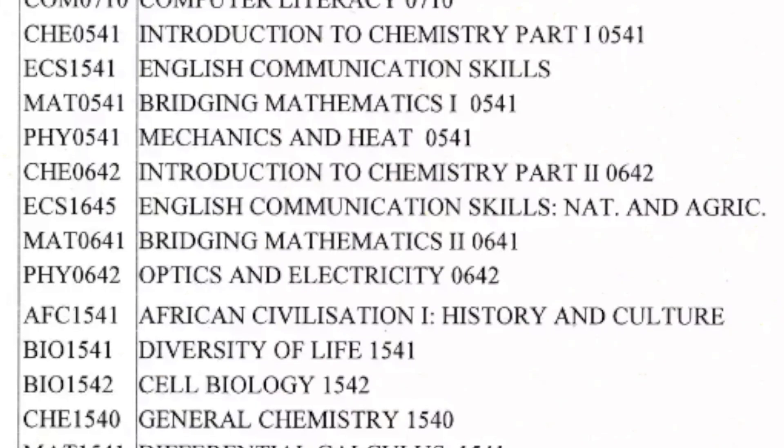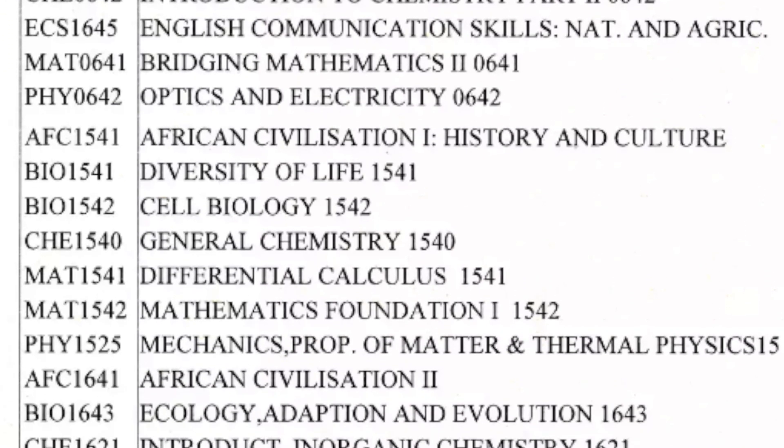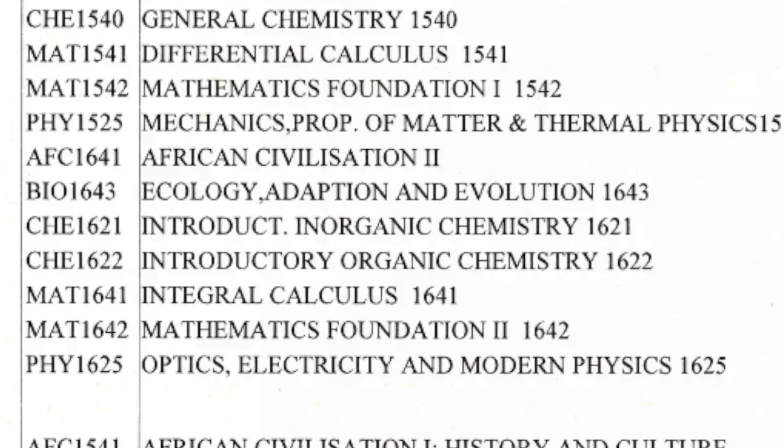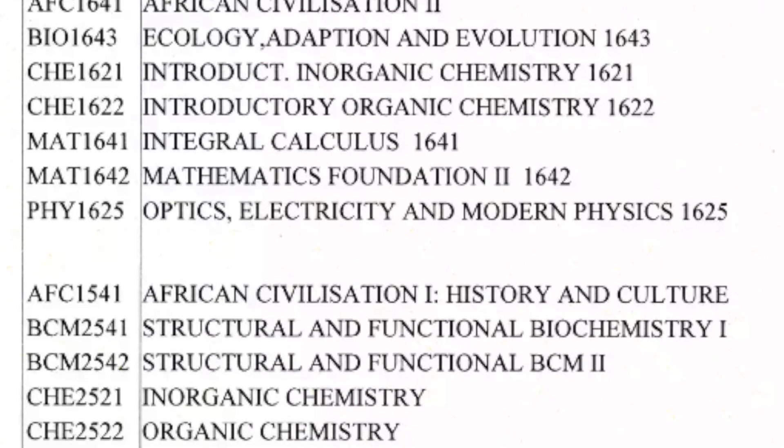Now let's talk about your academic record. Most schools are going to require prerequisite courses, and they might vary from school to school, but most schools require general chemistry, organic chemistry, physics, and biology. Check to make sure you actually have these courses. If not, you can actually take them in the year of applying, given that you take them before matriculation. Having a high GPA is really important for medical school admissions. Medical schools in the states divide how they look at your GPA into your cumulative GPA and your science GPA. Your cumulative GPA includes all of the courses you've taken throughout your university program, whereas your science GPA is largely just your science courses.